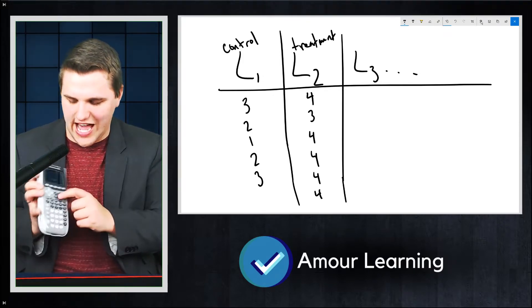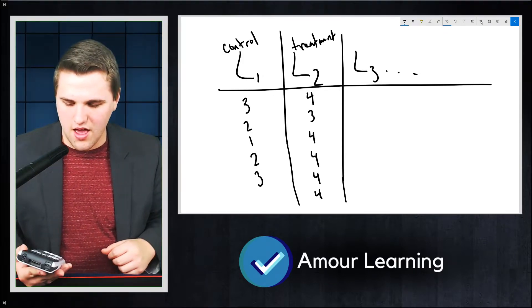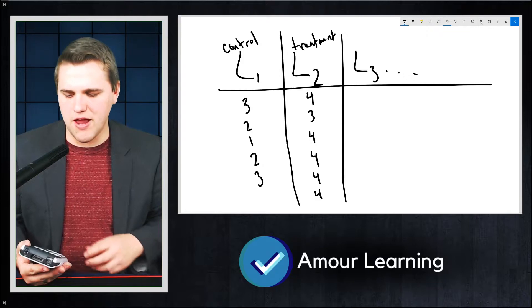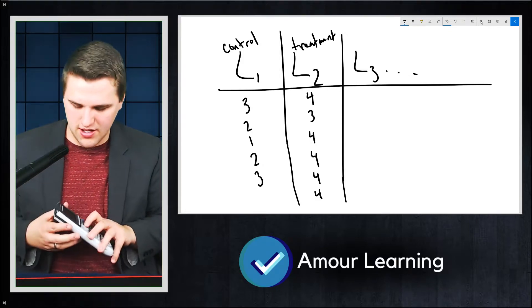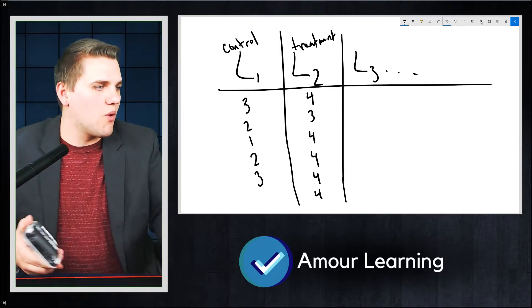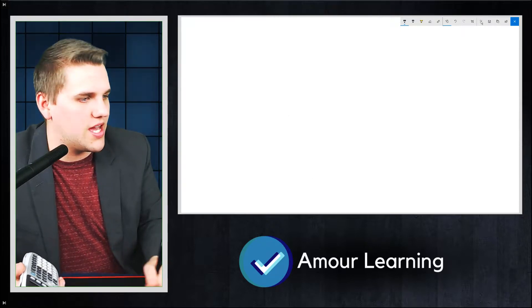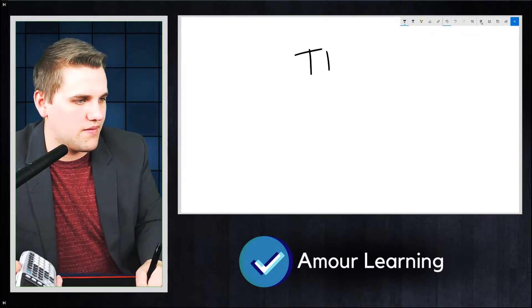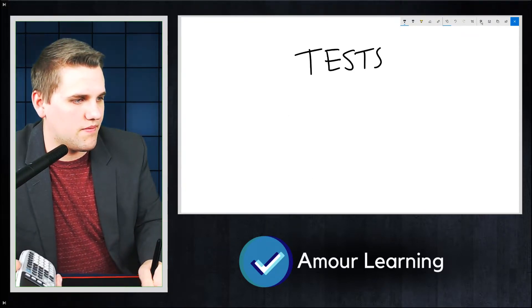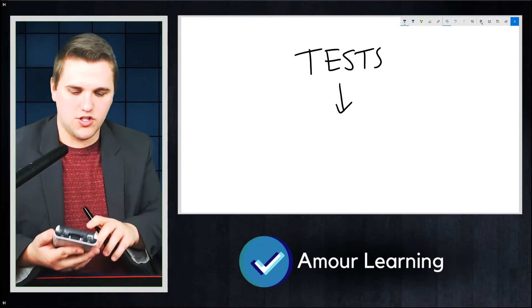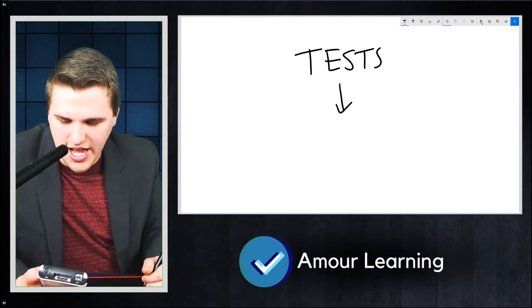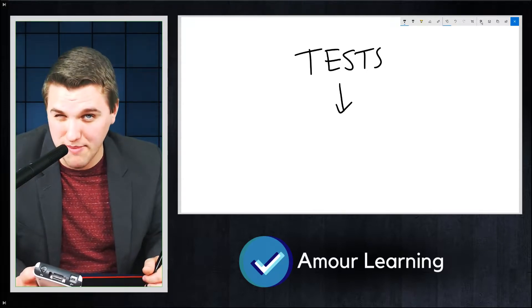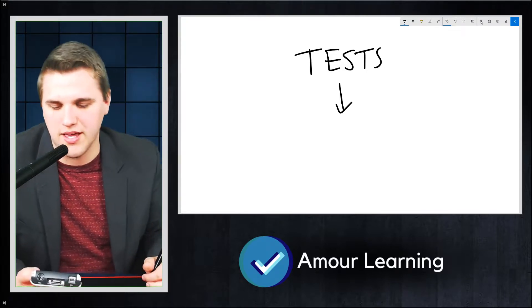And now we're going to go back to stats. You're going to hit the button that says STAT. And you're going to go back to that menu where you have edit, calc, and the test tab. Now we're going to scroll over to the test tab. So we are going to see the Z test, T test, 2 sample Z test, which we'll talk about later on. It sucks. That's my hint.